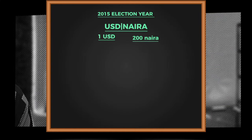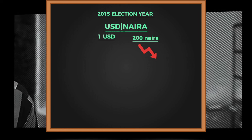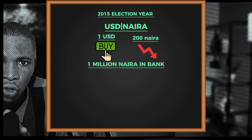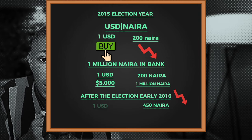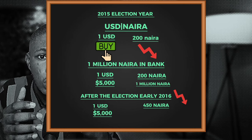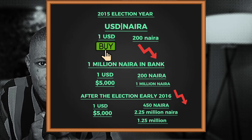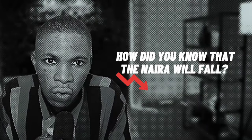Let's use an example to drive home this point. Before 2015, an average of 200 Naira was equivalent to one dollar. 2015 was an election year, so you anticipated that with the political uncertainties that come with elections, the Naira would fall. So you decided to buy dollars — you had 1 million Naira in the bank at 200 Naira per dollar, which equals 5,000 USD. After the election in early 2016, the Naira fell to about 450 per dollar. At that new exchange rate, 5,000 USD equals 2.25 million Naira — meaning you just made 1.25 million Naira within a few months without doing anything. This is basically what we do in forex. Why did you know the Naira would fall? Technical or fundamental analysis? I need answers in the comment section.